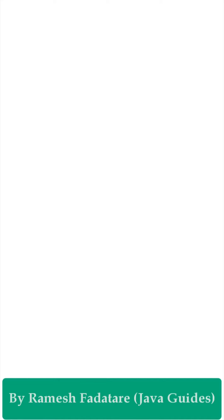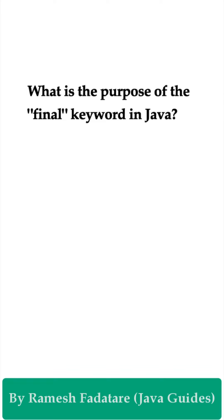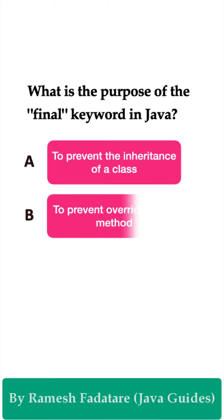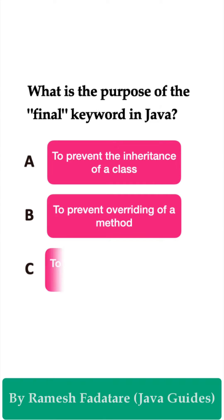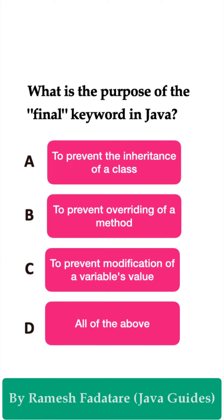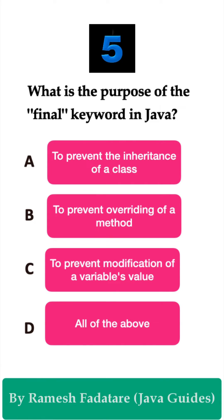Welcome to the Java Quiz Series. Here is one more question: What is the purpose of the final keyword in Java? Option A: to prevent the inheritance of a class. Option B: to prevent overriding of a method. Option C: to prevent modification of a variable's value. Option D: all of the above. You have five seconds to answer this question.